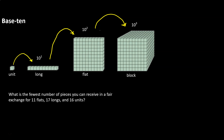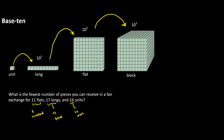So to elaborate on that, let's look at this example. There is the fewest number of pieces that we can receive in a fair exchange if we start with 11 flats, 17 longs, and 16 units. If you wanted to, you could look at this in terms of money — like you have 11 hundred dollar bills, 17 ten dollar bills, and 16 one dollar bills. I want to use the blocks because it's going to translate for us later when we're looking at things that don't work the way that our money does. But if that helps bridge a gap for you, then think of it in terms of money.